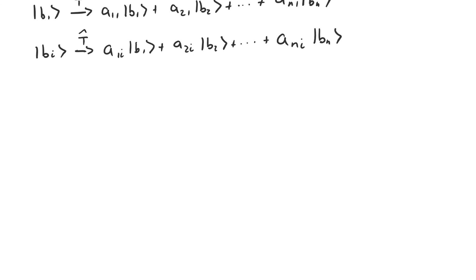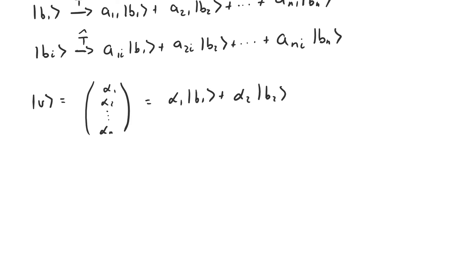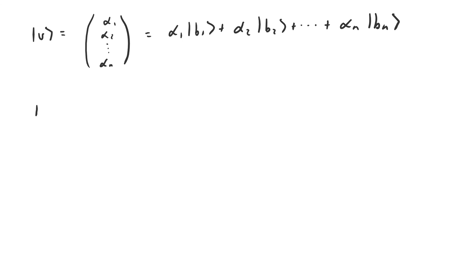So let's take an arbitrary vector v that's represented by this column vector. That means that v is equal to alpha1*b1 plus alpha2*b2, all the way up to alphan*bn. What happens when we apply the linear transformation t to this vector? Well, we know that we can apply t to each of the basis vectors in the expansion of v individually, because t is linear.